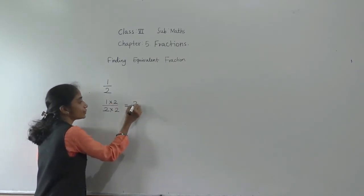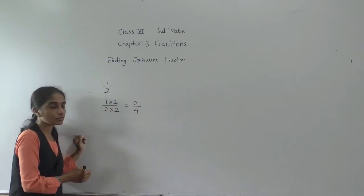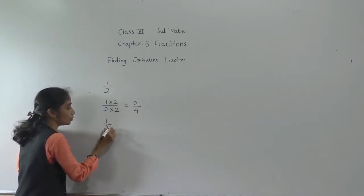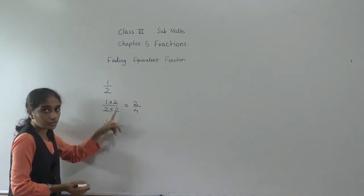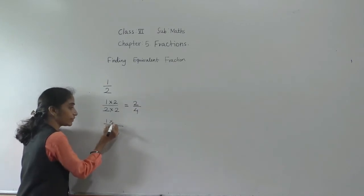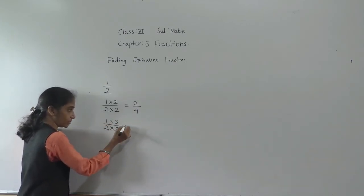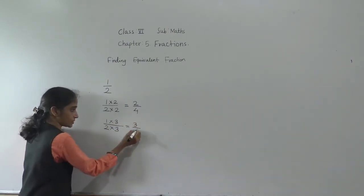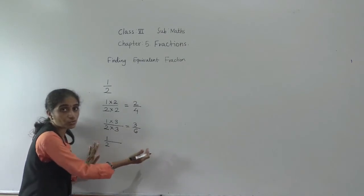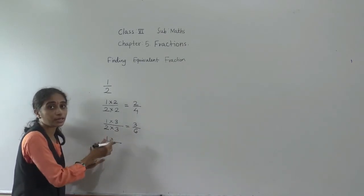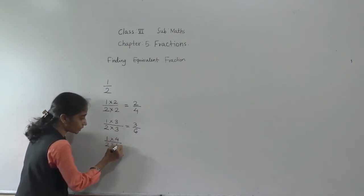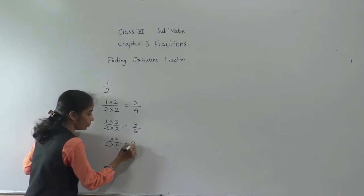We can still find many more equivalent fractions. Given fraction one upon two, we multiplied by two to get two upon four. Now multiply by three for numerator and denominator: three ones are three, three twos are six — we get three upon six. Multiply by four: four ones are four, four twos are eight — we get four upon eight.